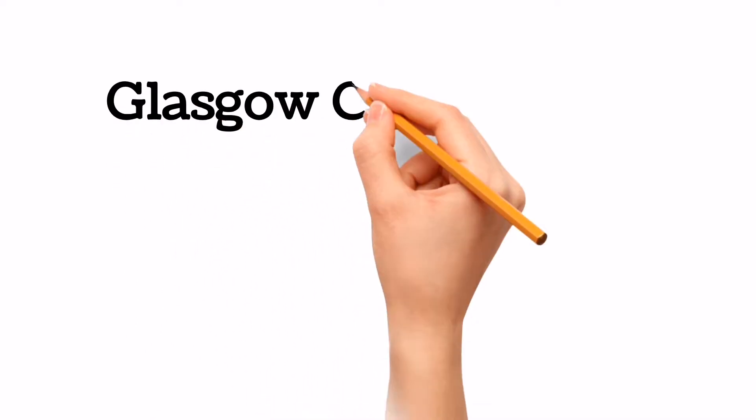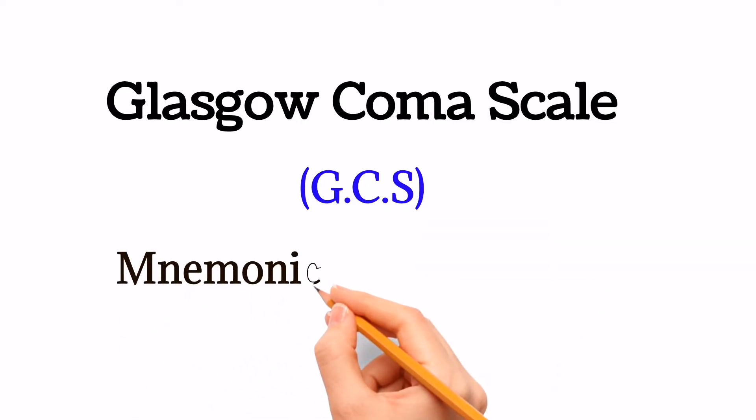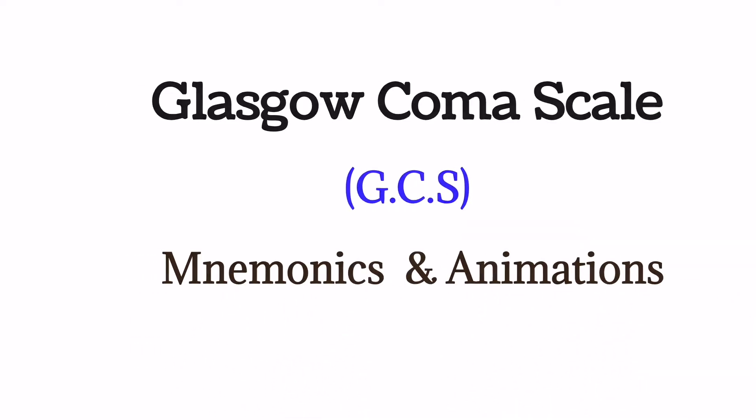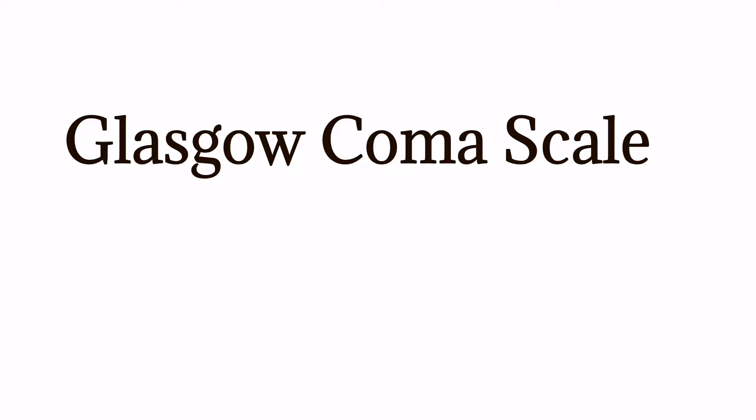Today we will learn Glasgow Coma Scale, shortly GCS, with mnemonics and animations. Glasgow Coma Scale is a clinical scale that is used to measure level of consciousness in patients after head trauma, in acute medical units, and for monitoring of chronic patients.